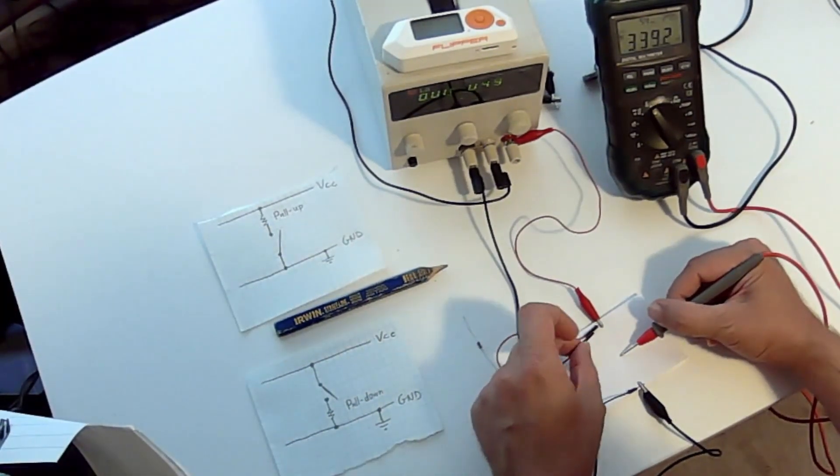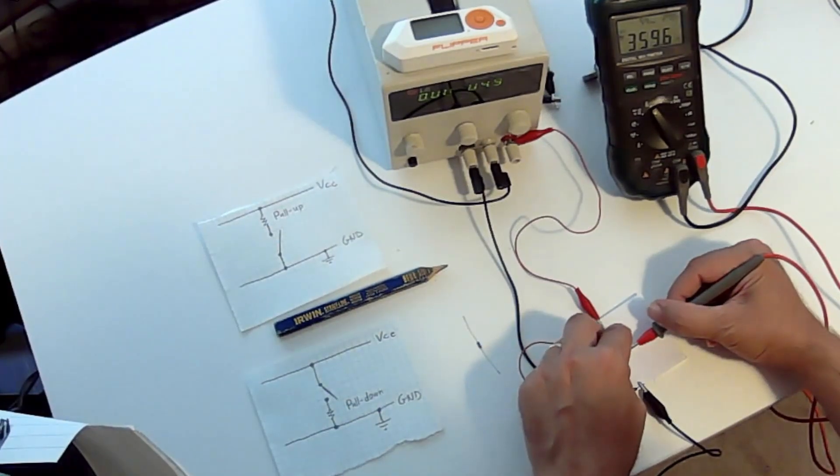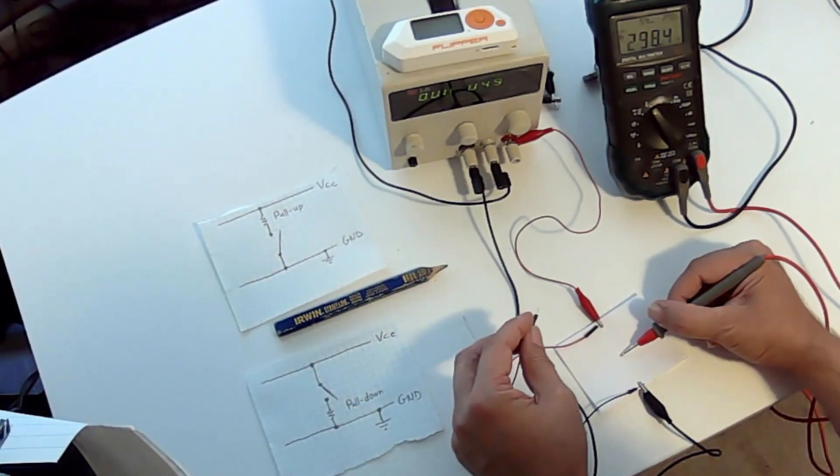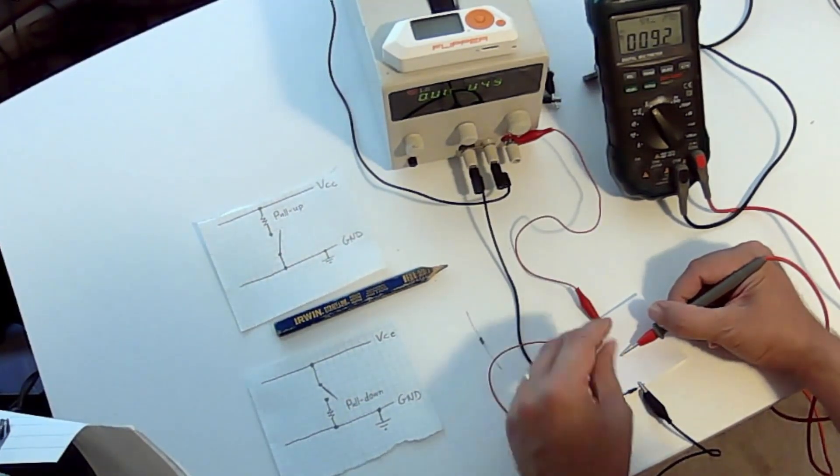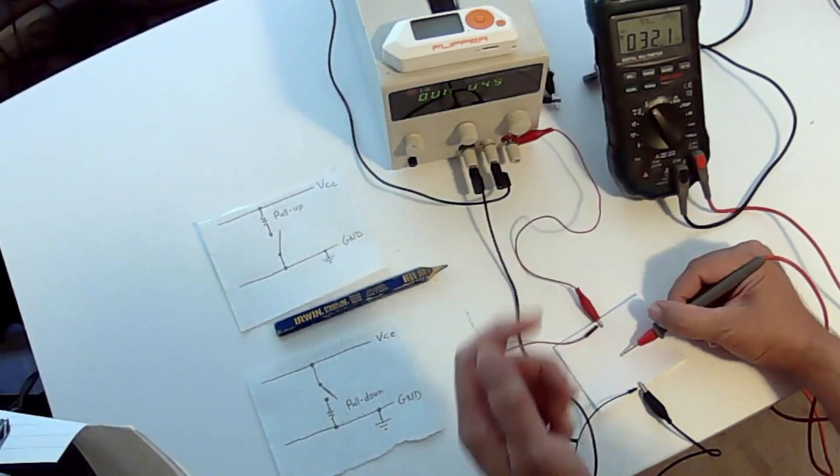Now, when the switch from our positive line gets connected, sure, we're at five volts. So when we connect it, we're at five volts. But when we're not connected, our voltage is jumping around.